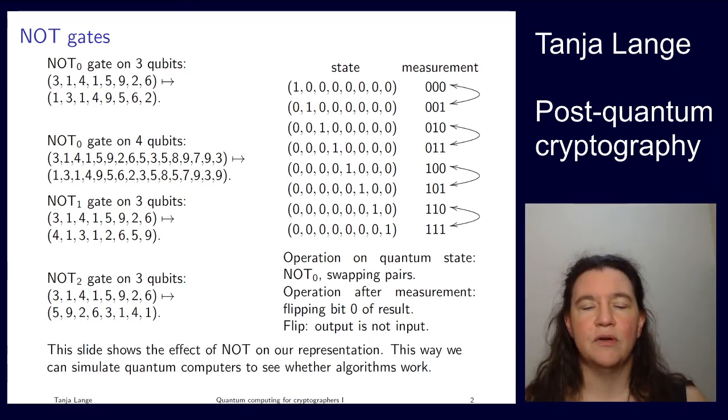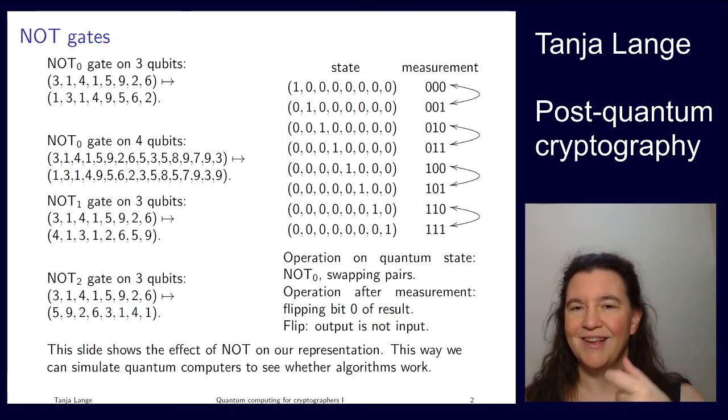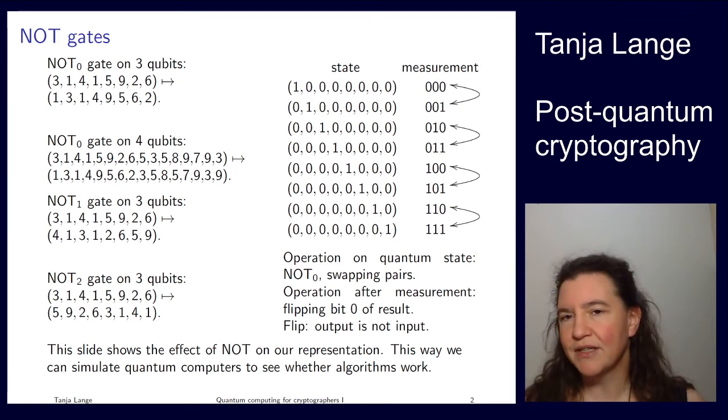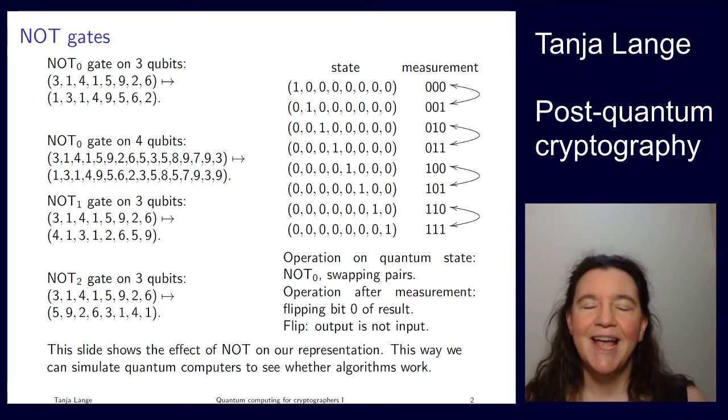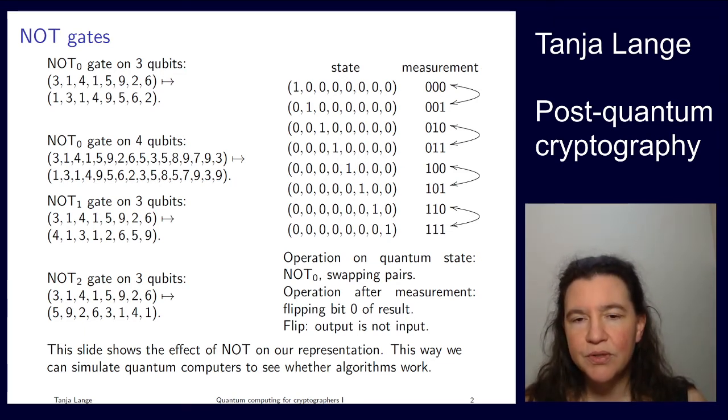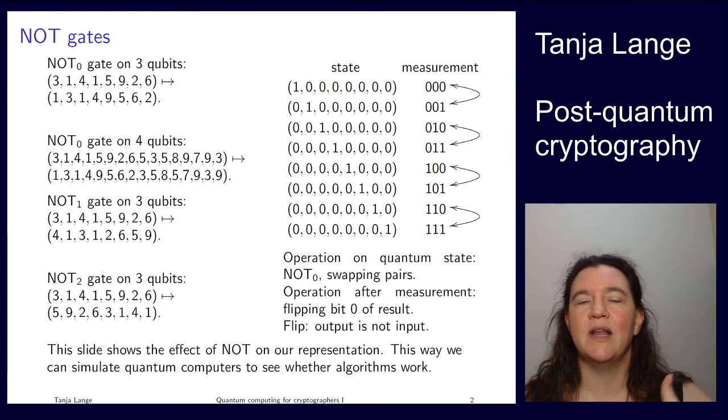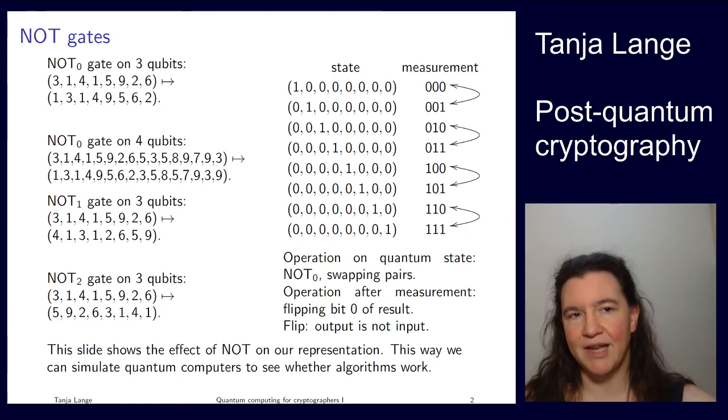We're showing the effect of NOT on our representation. That rightmost column is what you would have understood. Why is she going through all this complicated stuff? We need a representation that we can do the computations with on our current computers, so we can simulate quantum algorithms, see whether they work, whether we get the stopping conditions right. It's quite different from normal algorithms. We don't have this probability distribution, we can just ask it to output something. Here we get to output the most probable.